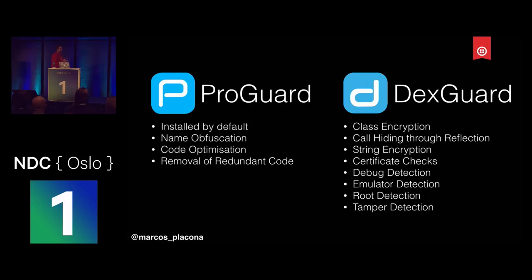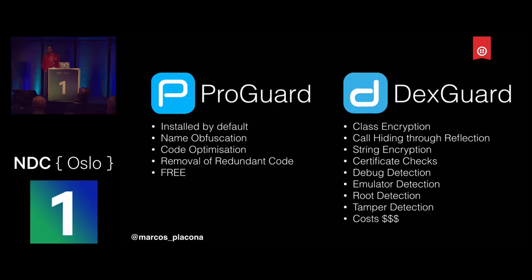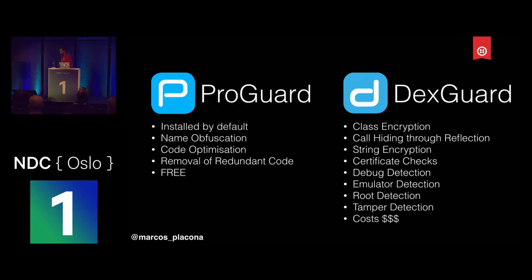The biggest difference is ProGuard is free. DexGuard costs money. If you have a banking application, you're probably going to want to go towards DexGuard. It also does root detection — and hackers get cleverer and cleverer about rooting. You might have a way of detecting root today, and a hacker will find a different bypass tomorrow. DexGuard keeps on top of it, making sure their root detection is very efficient. The difference really comes down to: how big is your application, and how much money can you lose if someone takes charge of it?